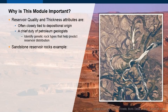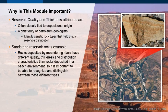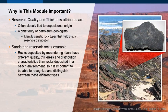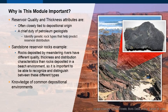For example, sandstone reservoir rocks deposited by meandering rivers have different quality, thickness, and distribution characteristics than sandstone reservoir rocks deposited in a beach environment, and so it is important to be able to recognize and distinguish between these different genetic rock types. By building knowledge of common depositional environments, geologists develop a basis for predicting reservoir distribution.